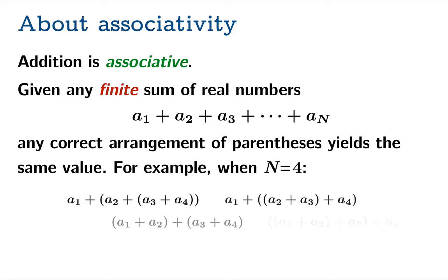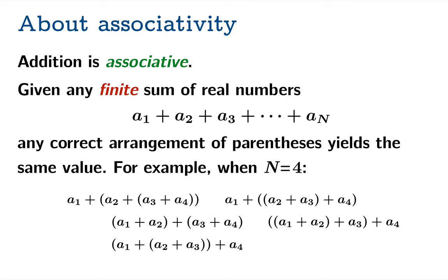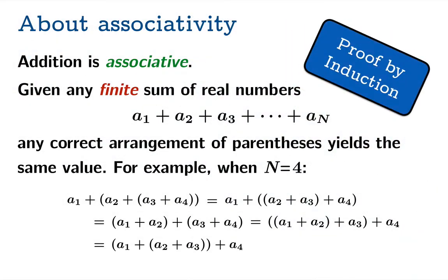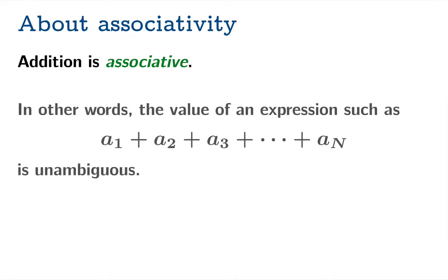For a finite sum, the associativity property says any correct arrangement of parentheses yields the same value. For example, with four summands, there are five ways to associate pairs — and of course each gives the same number. This requires a proof by induction on the number of summands to get the general result. But this associativity property applies to any finite sum of real numbers; it does not necessarily apply to an infinite sum. We were wrong to try to extend associativity to an infinite collection of numbers all at once.